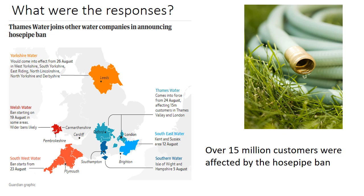A slightly harder response was that 15 million customers were given hosepipe bans. For the customers who obeyed the ban, this is probably effective because it means those customers are not watering their gardens and that's saving water. On the other hand, this is a very difficult thing to police — even with the threat of £1,000 fines for breaking the ban, it would take too much police time to effectively enforce. However, you could argue that most people will want to do the right thing, so overall this will have helped to save water.